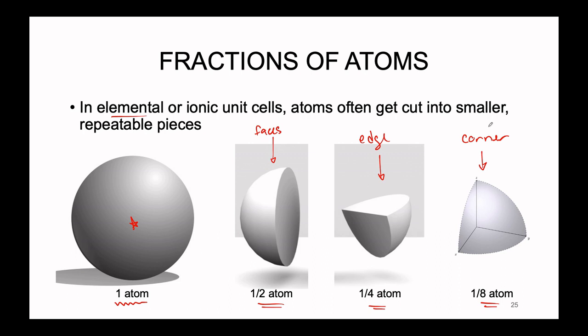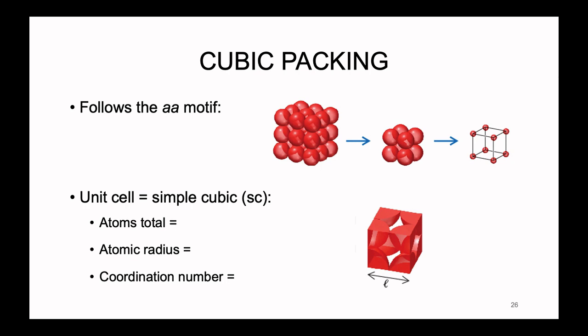We will not be working with molecular or largely covalent unit cells. We are going to be focusing strictly on the elemental/metallic as well as the ionic — these are the most manageable at the general chemistry level. So let's talk about all of the different ways that our atoms can arrange themselves inside of a unit cell in these nice repeating patterns. The first type of unit cell is literally the simplest we can make — it is the result of what is known as cubic packing.